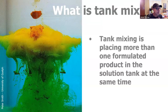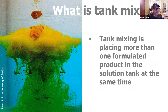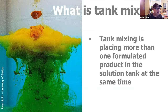Let's start with a pretty picture. This was by Peter Smith at the University of Guelph, and he won a photography award for this. This is what happens when you add prowl — a herbicide — into glyphosate, another herbicide. It's gorgeous. And it leads us into what tank mixing is. Tank mixing is when you put more than one formulated product in your solution tank at the same time, just so we're all clear.